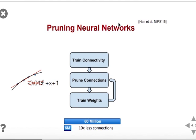The Han et al. algorithm works as follows: first we train our connectivity, then we start to prune — we retrain the weights and prune connectivities. When we see degradation in accuracy, we stop. We prune until we see some degradation in accuracy, and we do this for each layer iteratively, going step by step layer by layer until we've pruned the whole network.